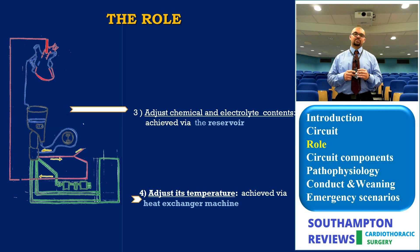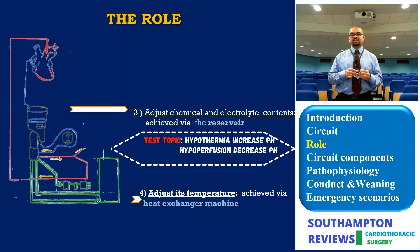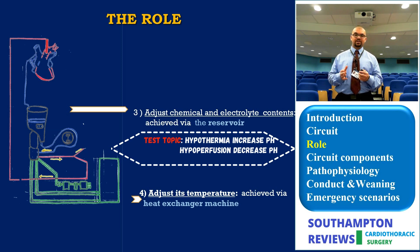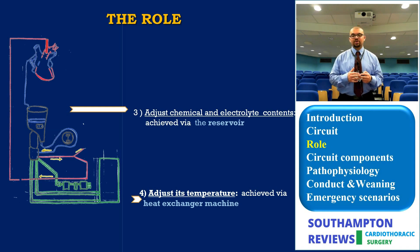Next is adjusting the chemical and electrolyte composition. Various electrolyte and chemical changes are elicited as soon as we go on bypass — we'll discuss this in detail in the passive physiology section. For example, cooling the blood increases pH, causing alkalosis, while periods of ischemia cause acidosis. There are also systemic changes in potassium, sodium, and various other electrolytes that we need means of sampling and adjusting.